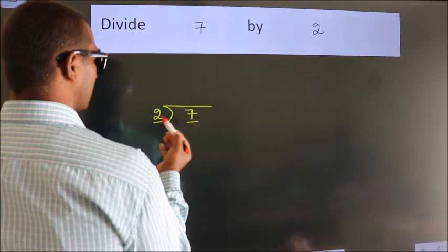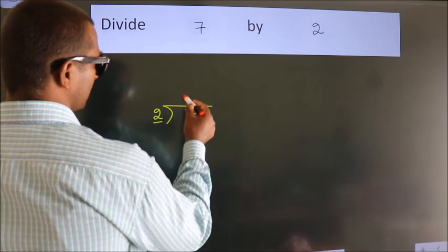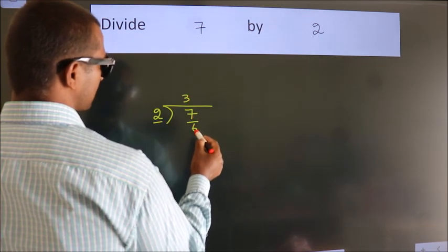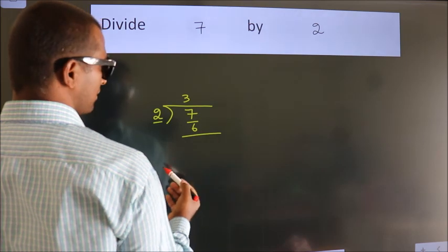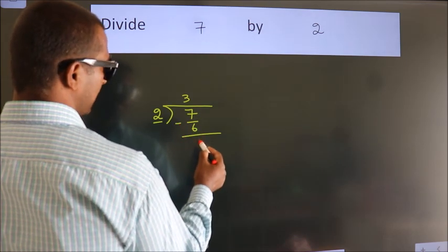A number close to 7 in the 2 table is 2 threes, 6. Now we should subtract. We get 1.